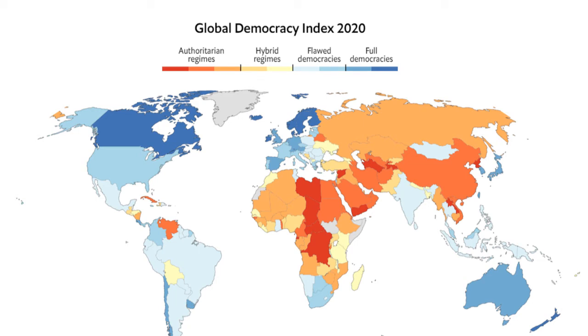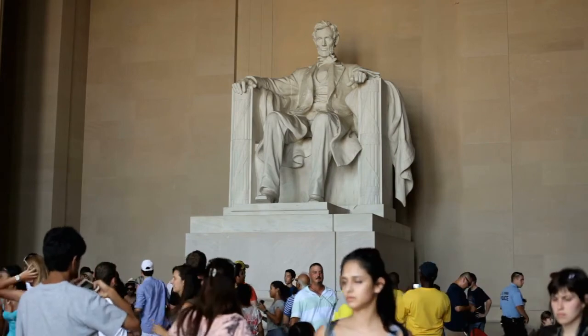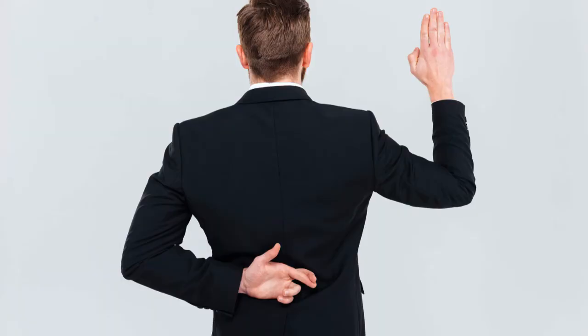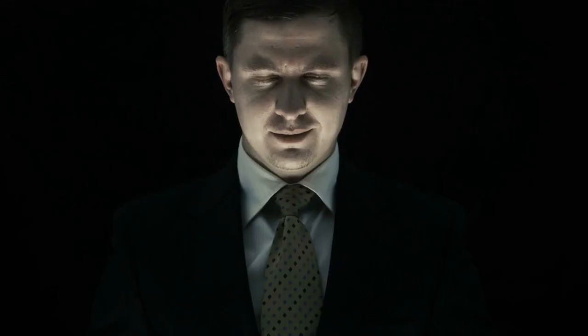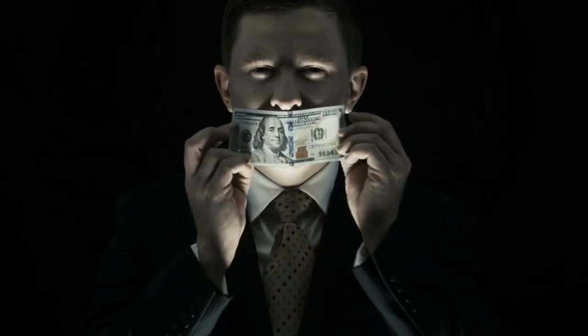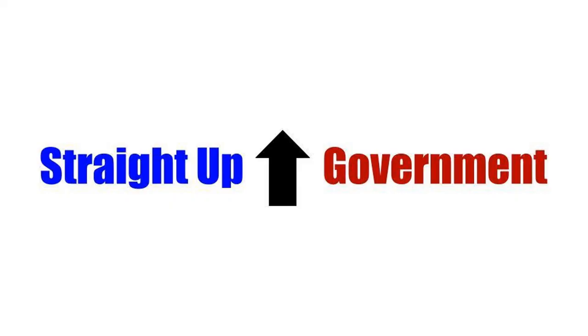You may even be surprised to see the United States is considered a flawed democracy on this scale. While the U.S. certainly holds democracy as a core part of its political culture, there are aspects of our system which do not absolutely uphold all the ideals of a textbook democracy. We will explore these issues and more in later episodes. We'll see you next time.